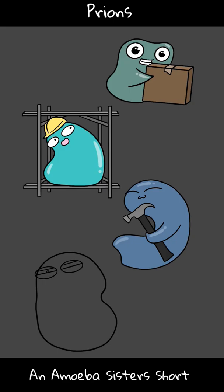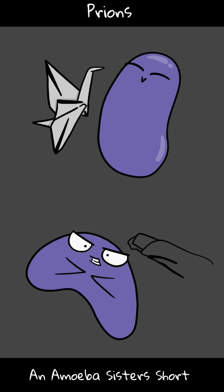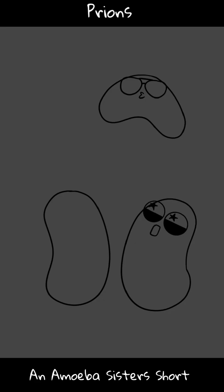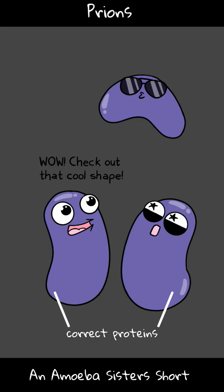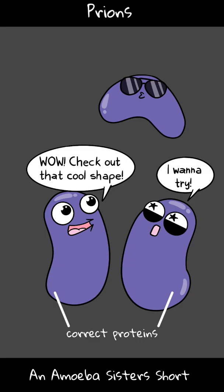Prions are proteins that have not been folded correctly — they're misfolded. So what happens if a prion is able to enter a cell that has the correctly folded proteins? It can cause the correctly folded proteins to also become misfolded, and all those misfolded proteins can gather and clump and it can cause mayhem in the cell.